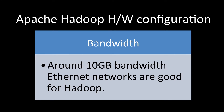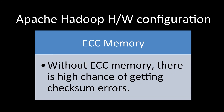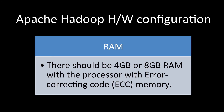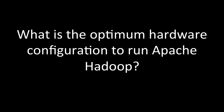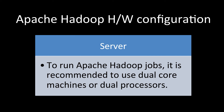Bandwidth is also an important factor. Even though we use commodity hardware, a good bandwidth is essential. Around 10 GB Ethernet bandwidth is very good for Hadoop. To summarize, the main hardware components for a Hadoop configuration are: server (dual-core), RAM with ECC memory, high-capacity SATA storage at 7200 RPM, and 10 GB Ethernet bandwidth.